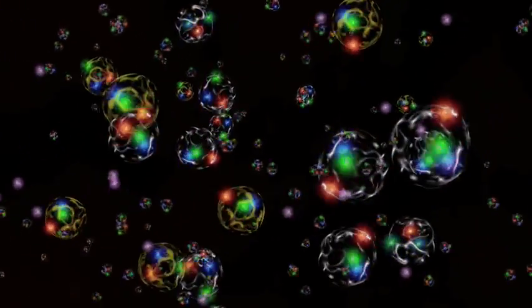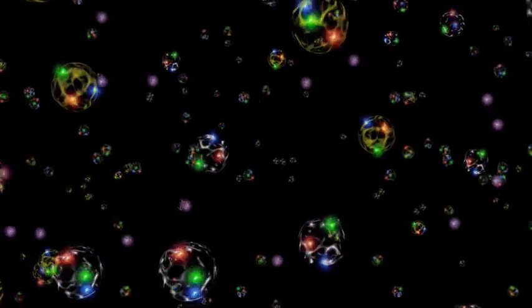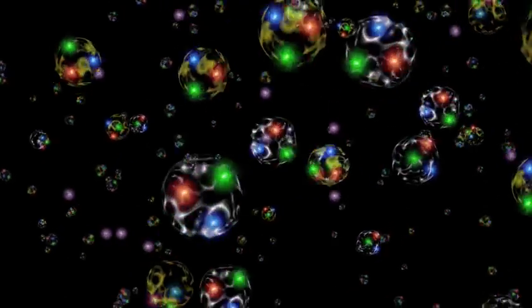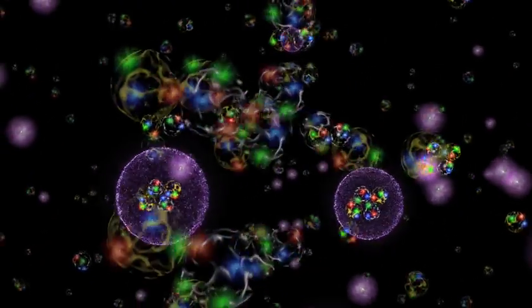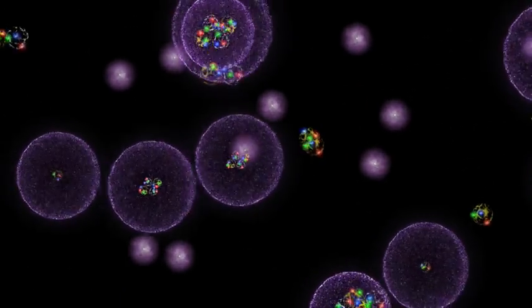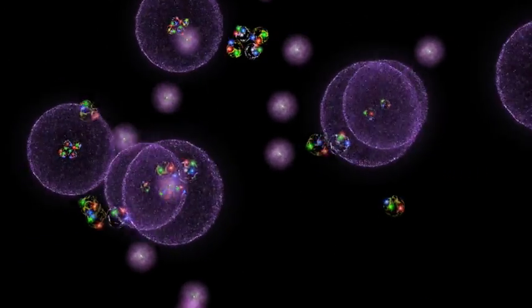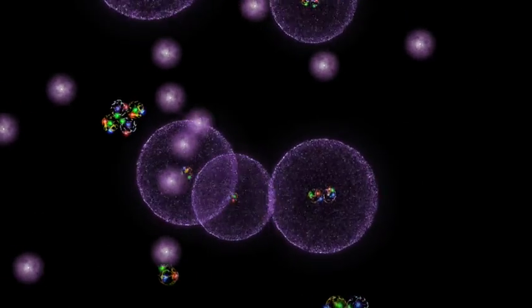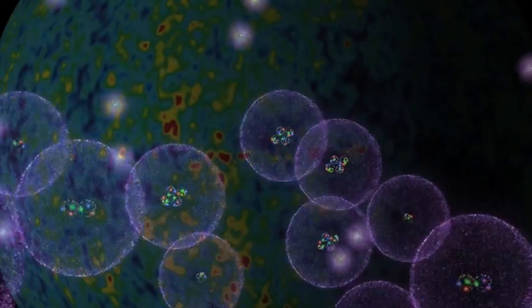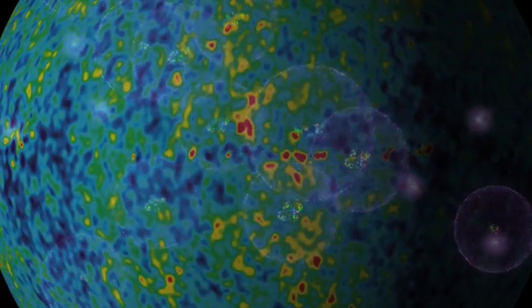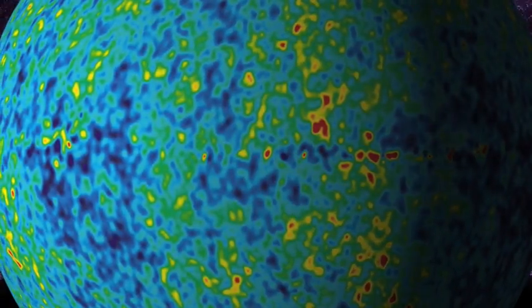After about 380,000 years of expansion and cooling, charged particles got together to form neutral atoms. And suddenly the photons that were bumping into charged particles every second or two were free to zip unhindered across space. This is the origin of the cosmic microwave background that we see today.